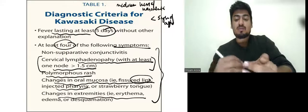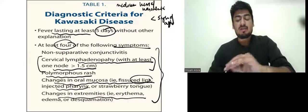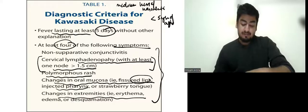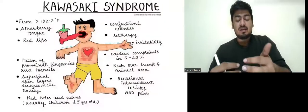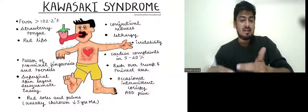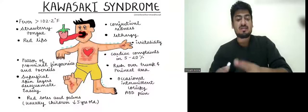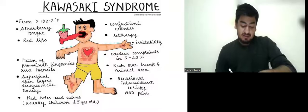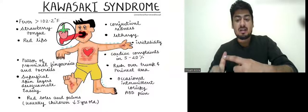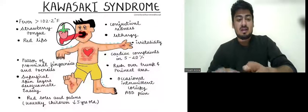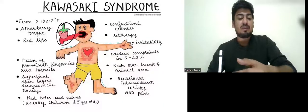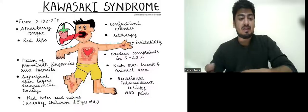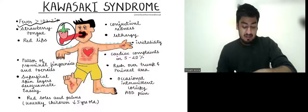It is a desquamative dermatitis — the superficial skin layers peel off. Here is a visual representation of strawberry tongue, which is a classical feature of Kawasaki disease. Fever, strawberry tongue, and red lips are characteristic findings.